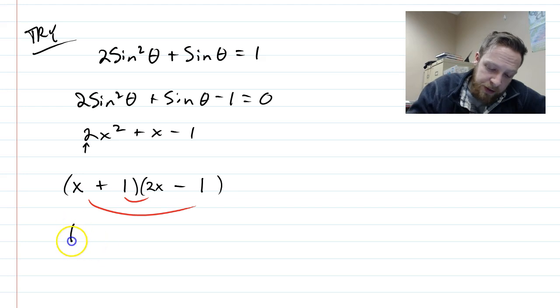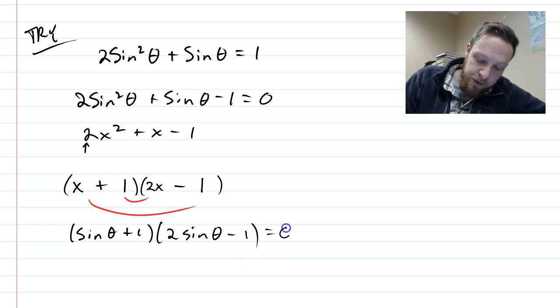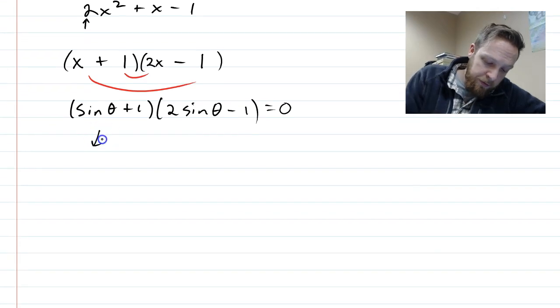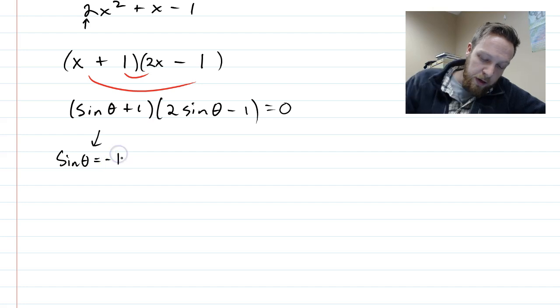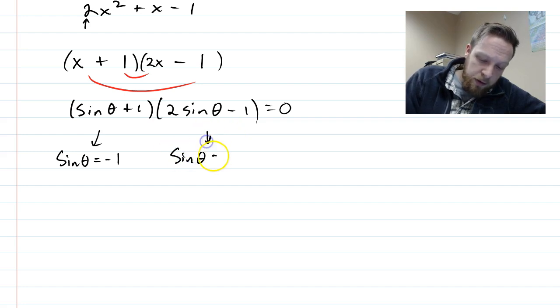Alright. So, what we're actually solving is, sine of theta plus 1, 2 sine of theta, 2 sine theta minus 1. Okay. And that is all equal to 0. So, we have actually two different problems we have to do. If I subtract 1 over, we're asking when is sine of theta equal to negative 1. And also, if we add 1 over and then divide by 2, sine of theta is equal to 1 half. When is that true?